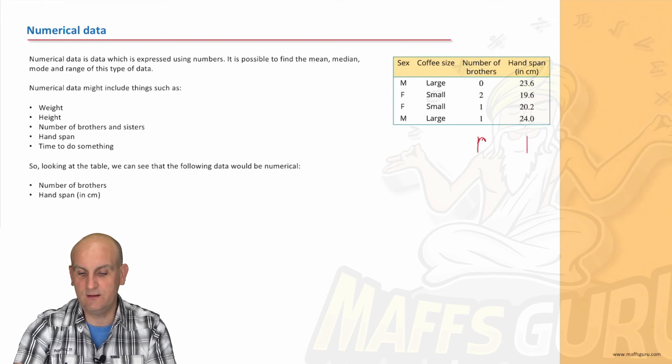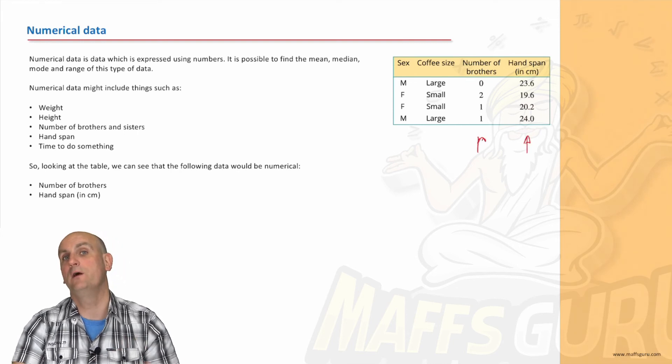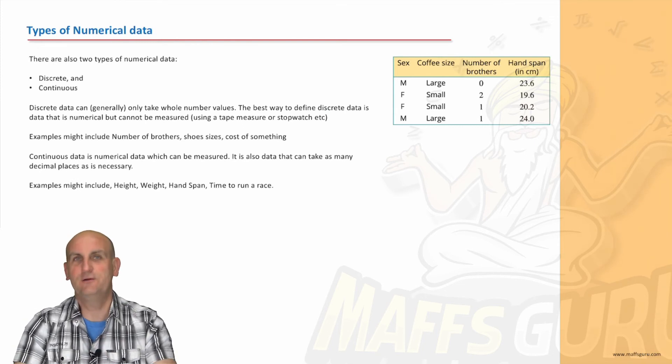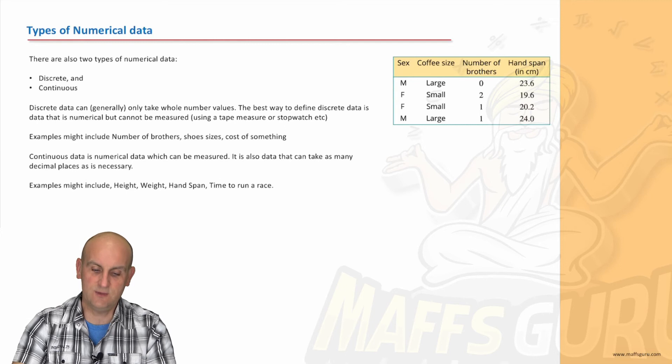And in this situation here, there we go, ladies and gentlemen, those two columns hold my numerical data. But guess what? Yes, numerical data can also be split into two categories as well.